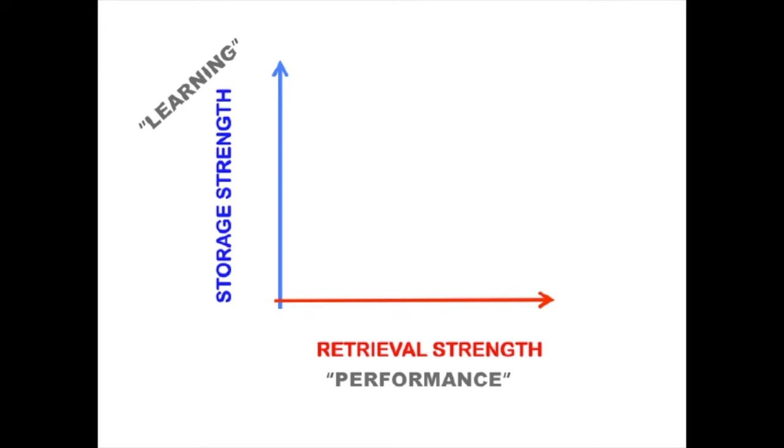What is directly measurable is retrieval strength, which is how easily something can be recalled right now. The retrieval strength of an item can fluctuate up and down depending on the cues in the environment. In other words, retrieval strength may be mapped onto performance. Can you do it right now? Whereas storage strength maps onto learning: information that is durable and which can be flexibly used in the future.